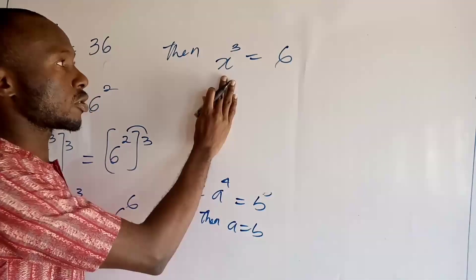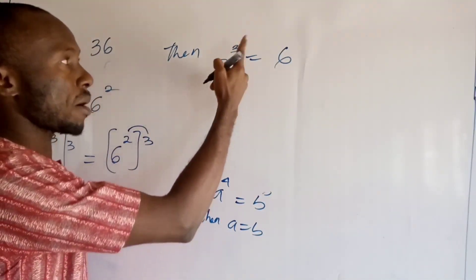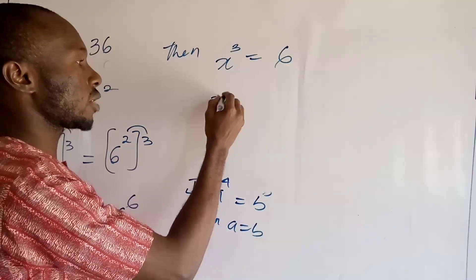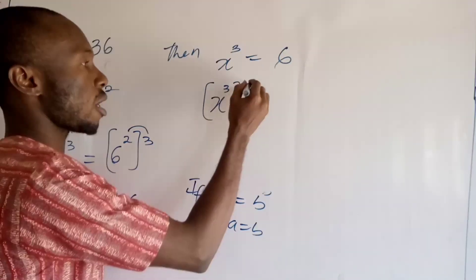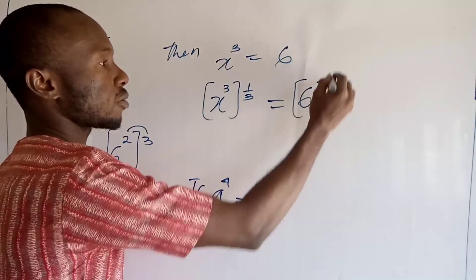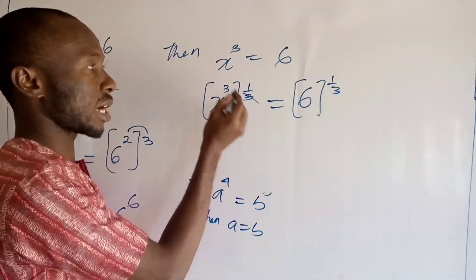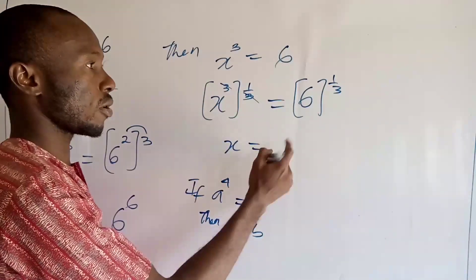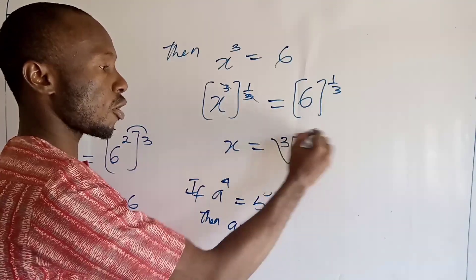At this point, you want to find the value of x. So you take the power of 1 over 3 of both sides. So you have (x^3)^(1/3) equal to 6^(1/3). So this 3, you can take away this 3. So x is equal to the cube root of 6.